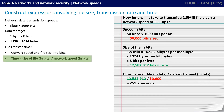Now we can perform the calculation: size of file in bits — 12.5 million — divided by the network speed in bits — 50,000 — gives us approximately 251.7 seconds. So it will take that long to transmit a 1.5 megabit file across a network with a speed of 50 kilobits per second.